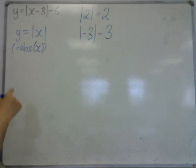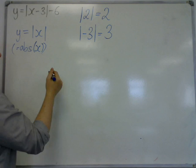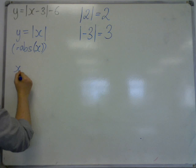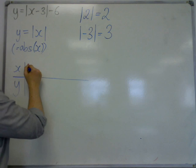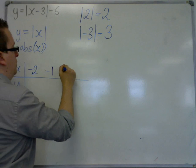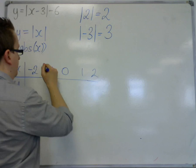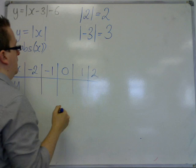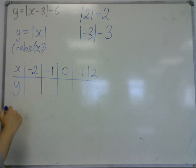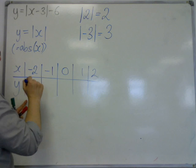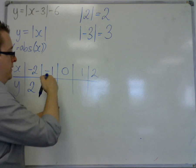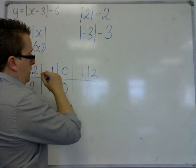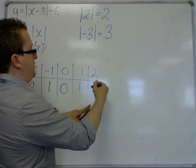So what this does effectively is that if you built up a table of values, let's say from minus 2 to 2, and y was mod x, well, the modulus of minus 2 is 2, the modulus of minus 1 is 1, the modulus of 0 is 0, the modulus of 1 is 1, the modulus of 2 is 2.